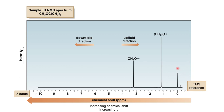The third signal appears at 0 ppm, which is because of TMS — tetramethylsilane — which is generally used as a reference. It always appears at 0 ppm and has a single peak upfield from the typical NMR absorption.